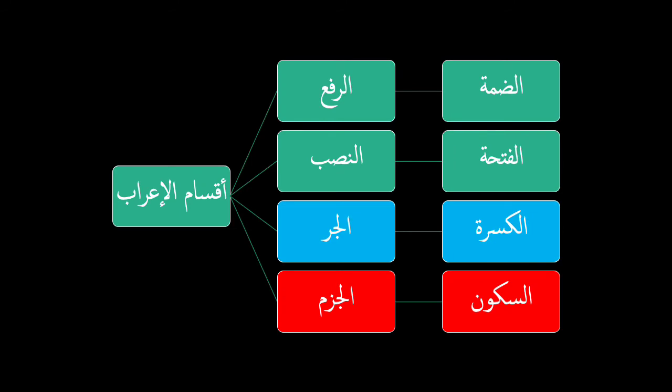The types of i'raab — anwa' al-i'raab and aqsam al-i'raab — are four, as the author mentioned: 'farfa' bi dhammin wa nasban fathan wa jarrun kasran kadhikrullahi abdahu yasra wajzim bi taskinin.' The rafi' (nominative) and the nasb (accusative) cases are shared by the ism (noun) — meaning the ism al-mu'rab — and by the fi'il — meaning the fi'il al-mudari'.